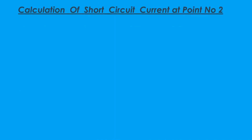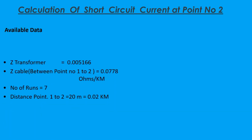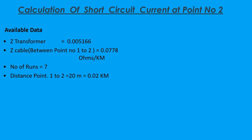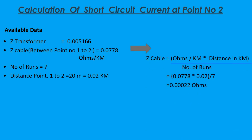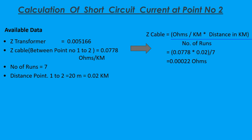For calculation of short circuit current at point number two, available data: Z transformer is 0.005166 ohms. Z cable between point number one and two is 0.0778 ohms per kilometre. Number of runs are seven and the distance from point one to two is 20 metres, which is 0.02 kilometres. Z cable equals ohms per kilometre multiplied by distance in kilometres divided by number of runs, giving 0.0778 times 0.02 divided by 7, which equals 0.00022 ohms.